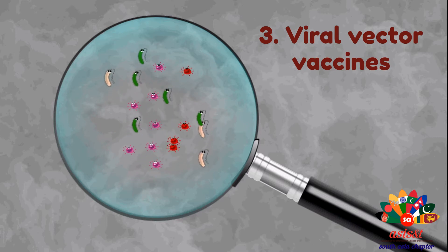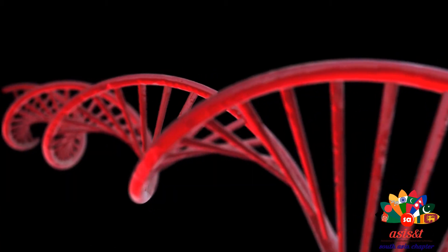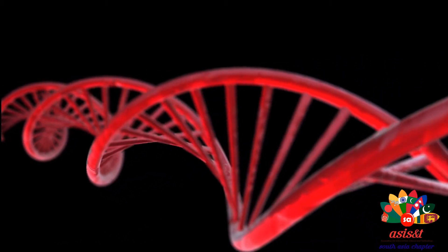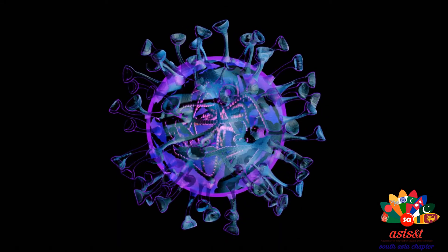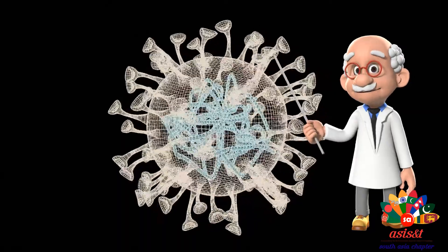RNA and DNA vaccines use genetically engineered RNA or DNA to generate a protein that itself safely prompts an immune response. Almost all types of vaccines are available in South Asian countries.